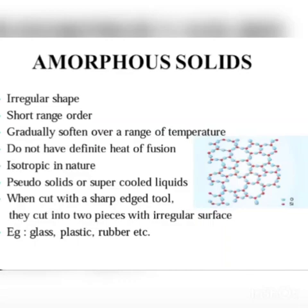Amorphous solids are pseudosolids or supercooled liquids. For example, glass is an amorphous solid — the bottom portion of old glass panes is thicker because glass molecules flow very very slowly over time.